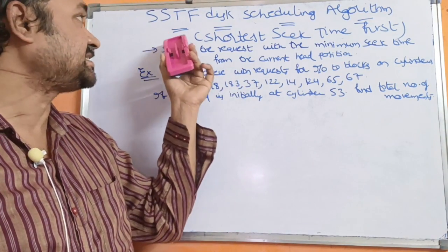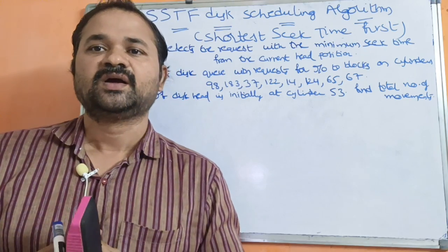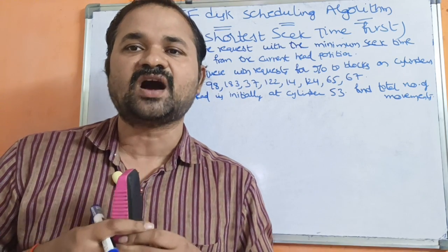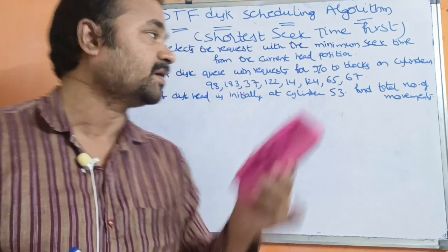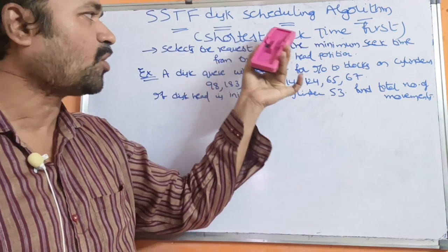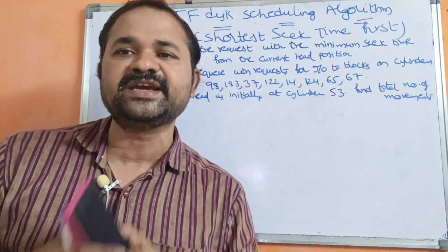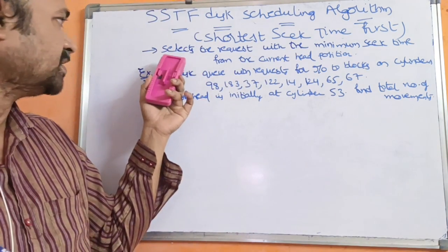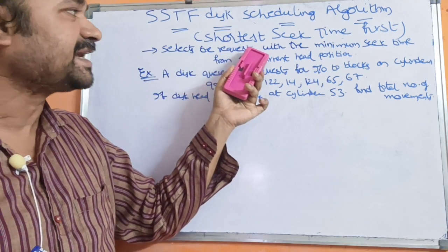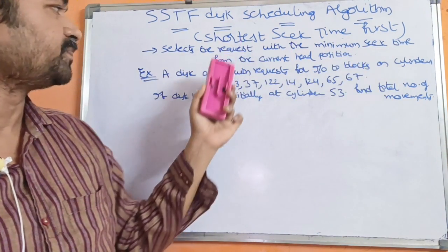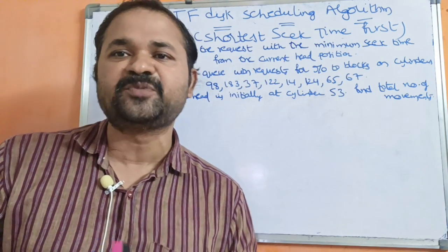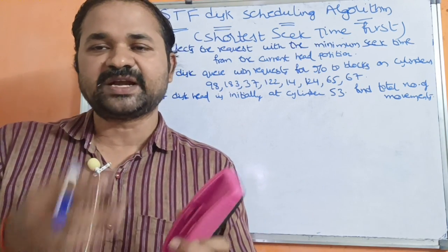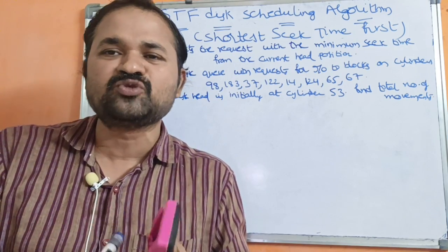Now let us discuss the SSTF disk scheduling algorithm. Scheduling algorithms decide the order in which jobs are to be executed. SSTF stands for Shortest Seek Time First Scheduling Algorithm. The key principle is that from the current head position, we have to select the request with minimum seek time — that is, the nearest cylinder value.